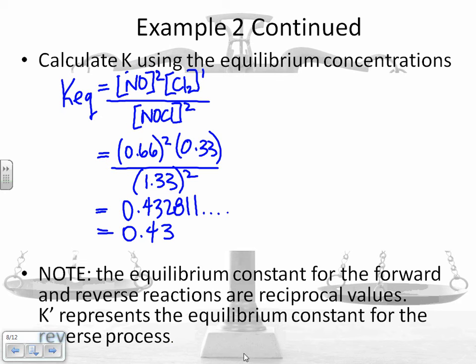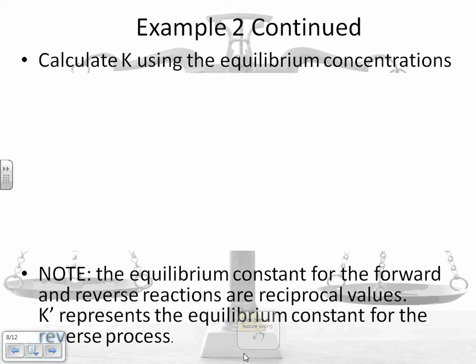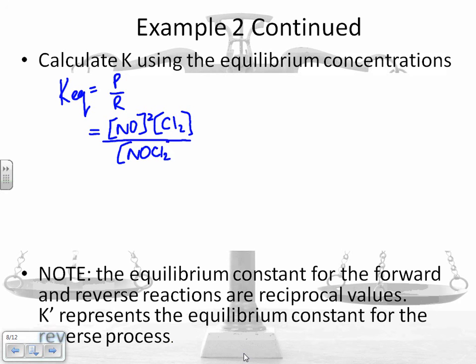So when I calculate K, using the equilibrium law. Remember from the last slide, or what's in your notes, that the equilibrium law, KEQ, is always products divided by reactants. So in this example, it's NO squared, because there's a 2 in front of it, times your concentration of Cl2, divided by your concentration of NOCl squared.